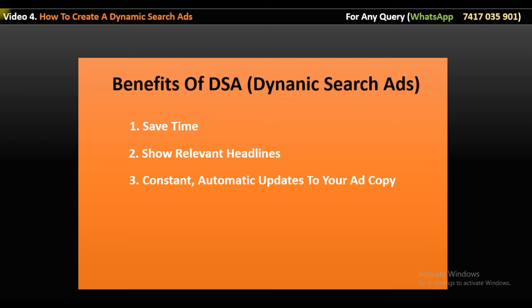Third point is campaign control — you can easily control your campaign. If DSA dynamic search ads are there, fifth point is no keyword research. There is no need to create ads without headline 1, headline 2, and without keywords. Google itself will control your campaign and your ads. Fifth benefit is it helps customers as well.